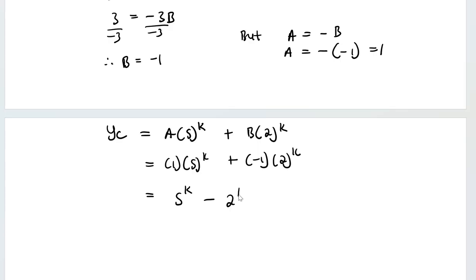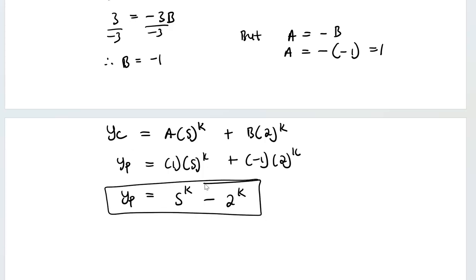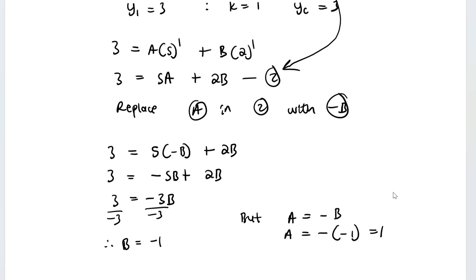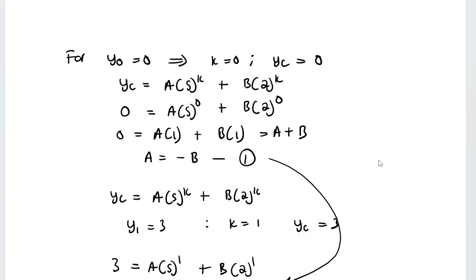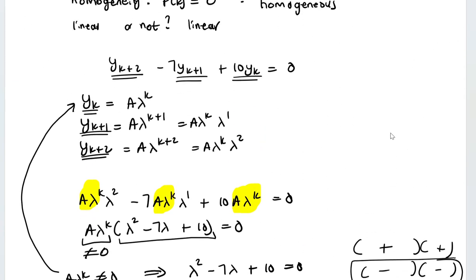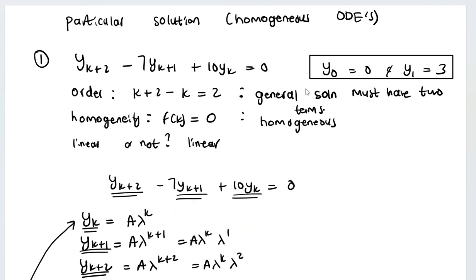Substituting A=1 and B=−1 into the complementary function gives y sub p equals 5^k minus 2^k. Since we have solved for the constants, this is no longer a complementary function — it is now called the particular solution. This is how you use initial conditions to find the particular solution to a recurrence relation.